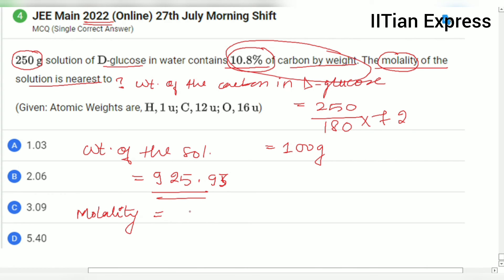Molality is number of mole of solute divided by mass of solvent in kg. This is the formula.